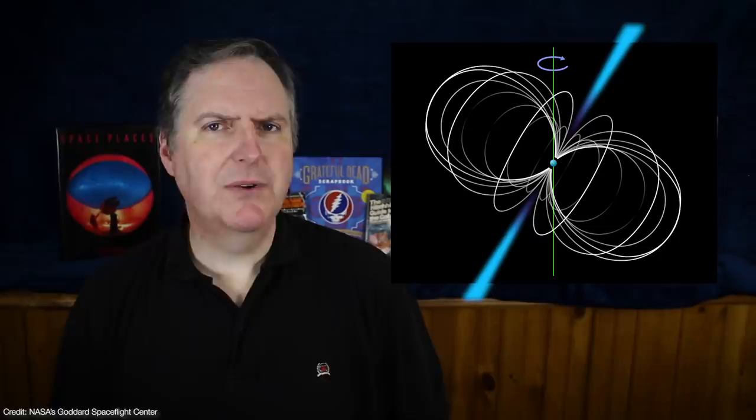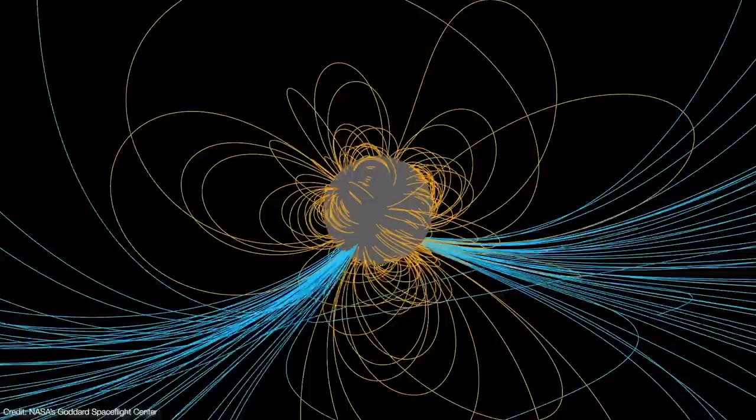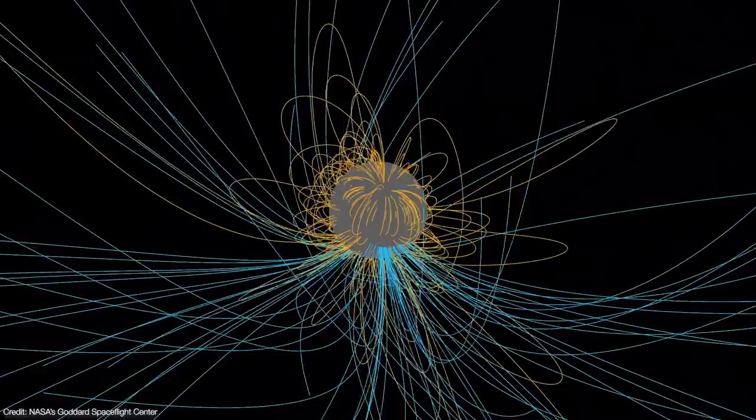Well, researchers who study pulsars would be the first to tell you that the traditional dipole model doesn't satisfactorily explain all of the observational pulsar phenomena over the last 50-plus years. Higher-order magnetic multipoles have been proposed to explain different pulsar observations, but the resulting magnetic fields are much more complex and require numerical simulations that can only be done on supercomputers.